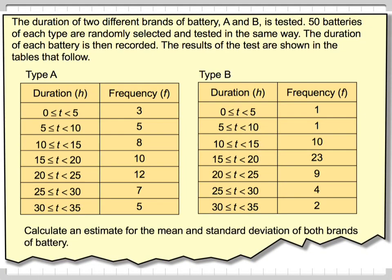In this video we're going to find an estimate for the mean and standard deviation. The duration of two different brands of battery, A and B, is tested. 50 batteries of each type are randomly selected and tested in the same way. The duration of each battery is then recorded. The results of the test are shown in the tables that follow.